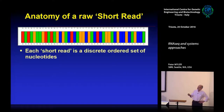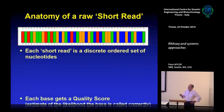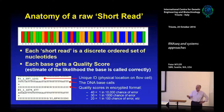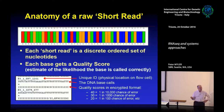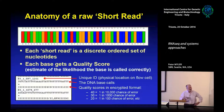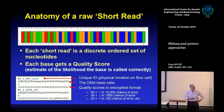Each short read is a discrete ordered set of nucleotides, and each base gets a quality score — an estimate of the likelihood that the base was called correctly. The sequencer outputs a FastQ file that will be 50 million lines long — a text file most of you won't even be able to open. Each read has a unique ID, a sequence, and a quality score encoded as characters. Quality ranges from 1 (crappy) to 40 (really good).